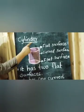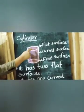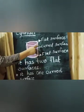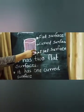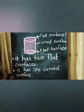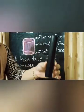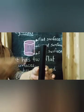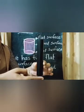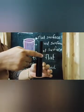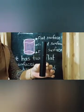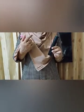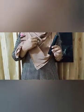Next, Cylinder. A Cylinder has 2 flat surfaces and 1 curved surface. It is a Cylinder shape — it has 2 flat surfaces and 1 curved surface. An LPG Cylinder and a Candle are examples of a Cylinder.